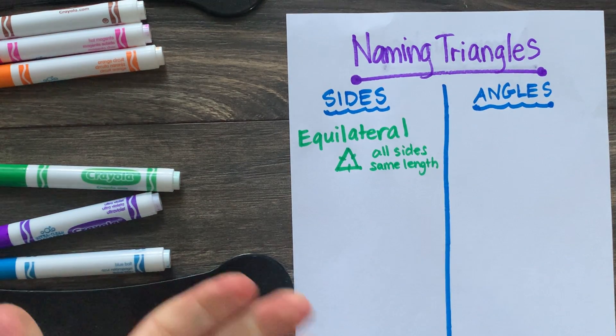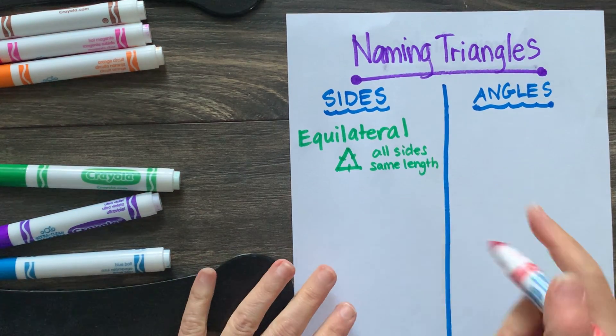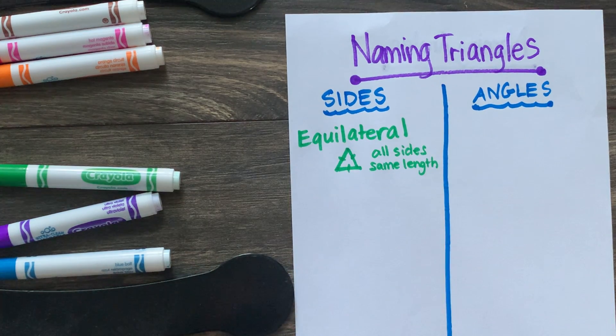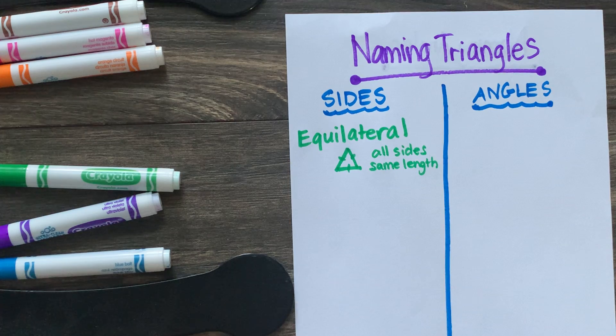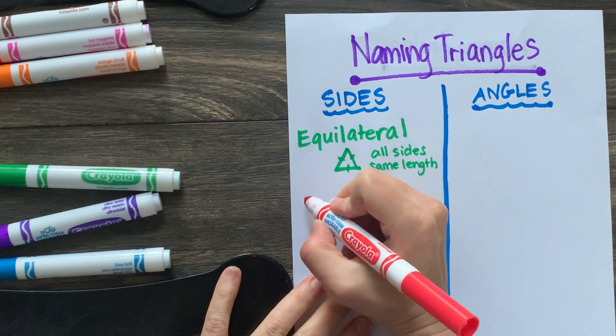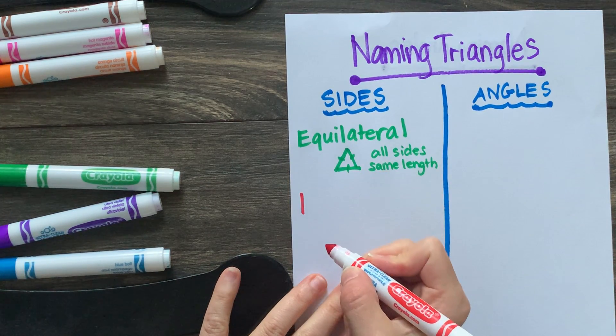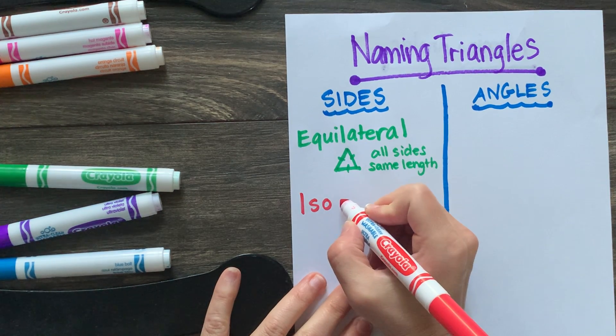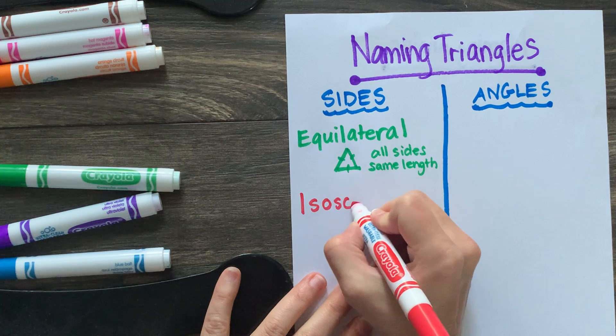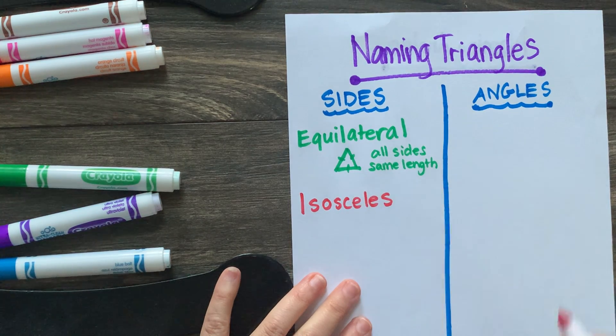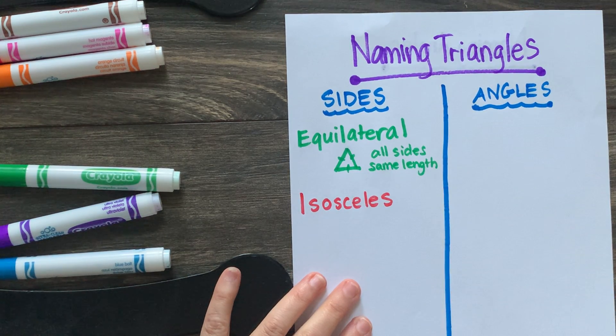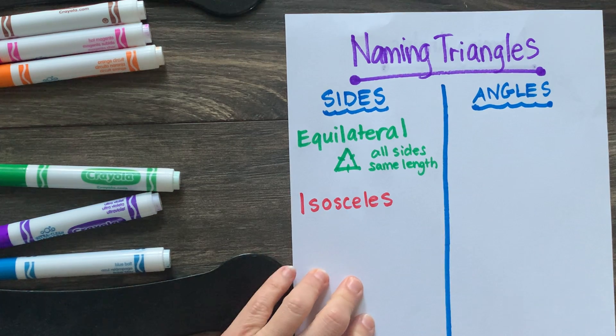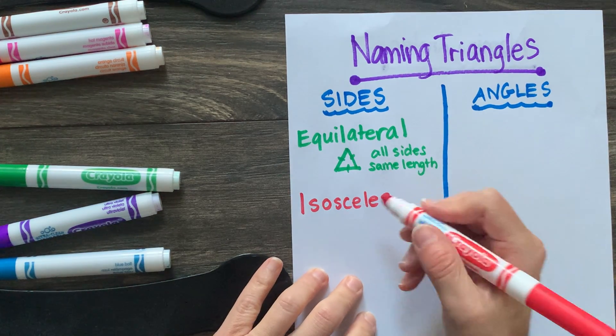In a triangle, which we have two sides the same length. Can you shout it out for a minute? I'll give you a chance. Did you say it? Wonderful. This one is called an isosceles triangle. So we have, there we go.